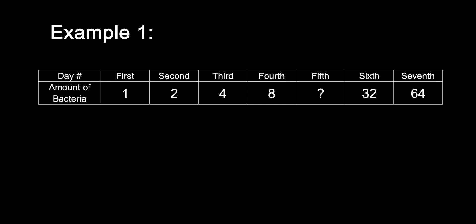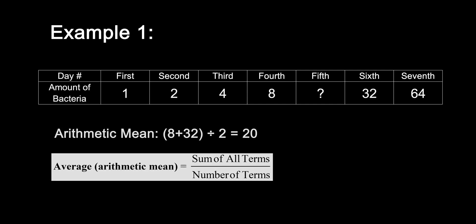In the first example, we are given data that tracks the growth of a single bacterium organism every day for a week, but on the fifth day, we are missing a result. To find the value that we are missing, we need to find the average between day 4 and day 6. Let's try doing this using the arithmetic mean first, the way we typically use for calculating an average. 8 plus 32 equals 40. Divide that by 2, and we get 20 for the fifth day. At first glance, that doesn't seem like a wrong number, but as you can probably see, it doesn't follow the pattern that we can see has been established.